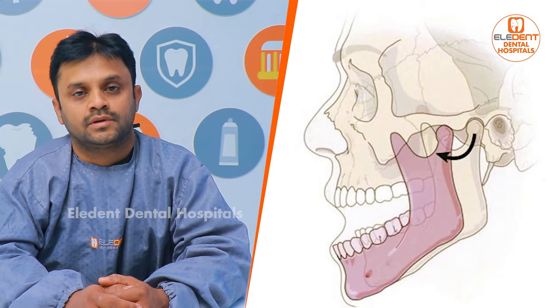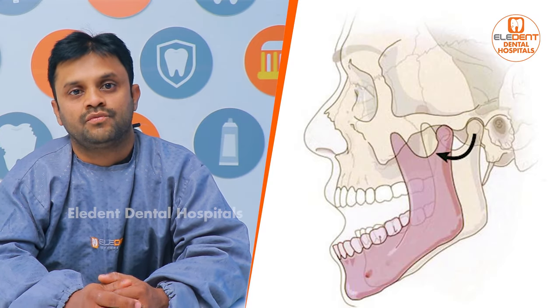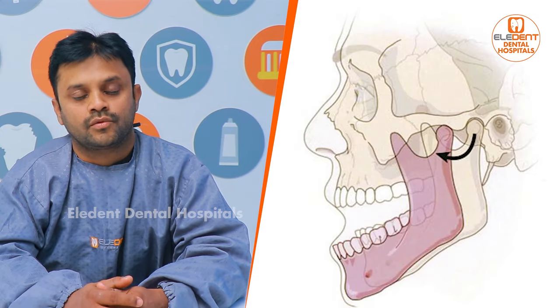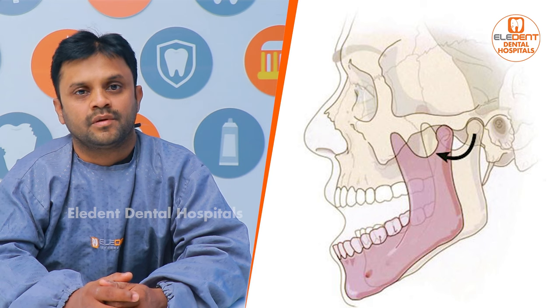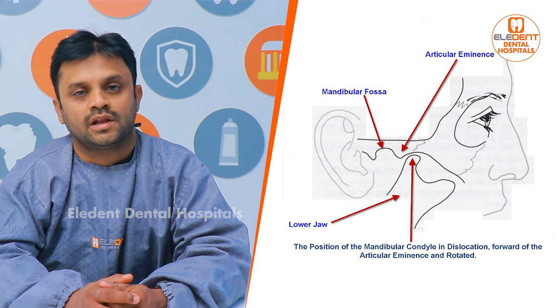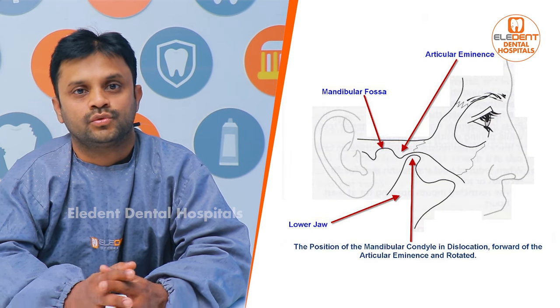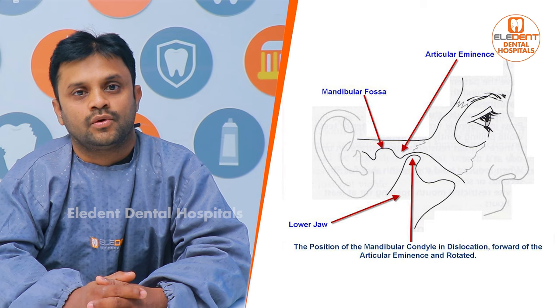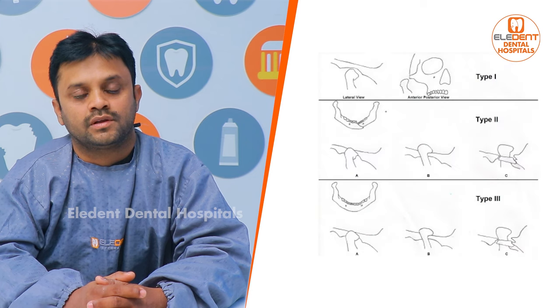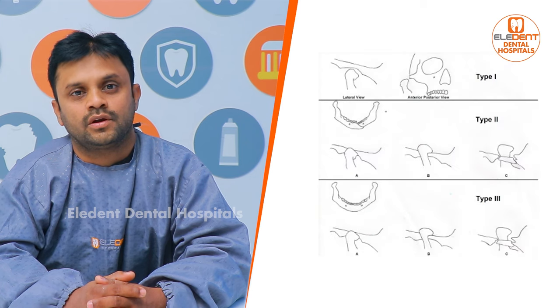TMJ Dislocation can occur due to wide opening of mouth, medications, and many other reasons. There are three types: Acute, Chronic, Chronic Recurrent, or Subluxation.